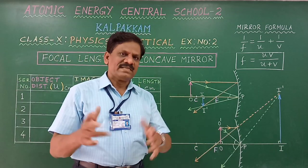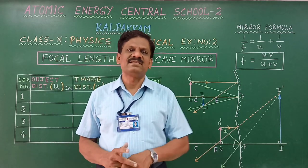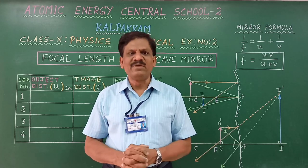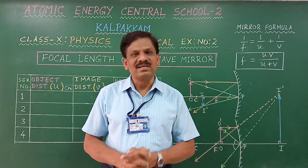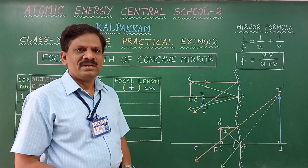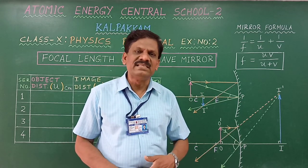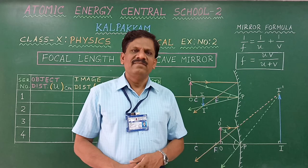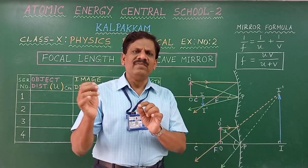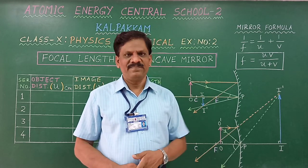You must have studied in the theory classes the two types of spherical mirrors. One is concave mirror, the other one is convex mirror, but we have chosen the concave mirror. Concave mirror is also called converging mirror, because when parallel rays are incident on a concave mirror, they all will be reflected and converge at a point called the principal focus.